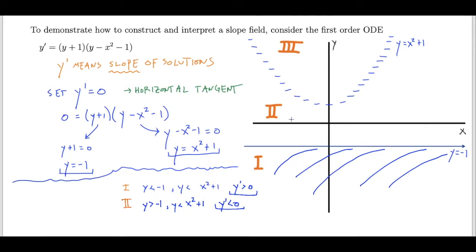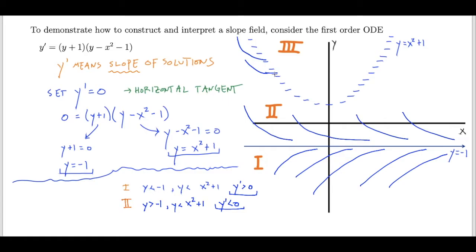There are a couple of different types of solutions in region 2. Many solutions in this part of region 2 will simply decrease and approach y equals negative 1 as x grows without bound. However, some solutions will decrease, approach a horizontal tangent as they near the curve y equals x² + 1, pass over that boundary, and enter region 3. So solutions in region 2 must decrease while they remain there, but as they approach y = x² + 1 they approach a slope of zero, and as they exit into region 3, they will have a slope of exactly zero momentarily.